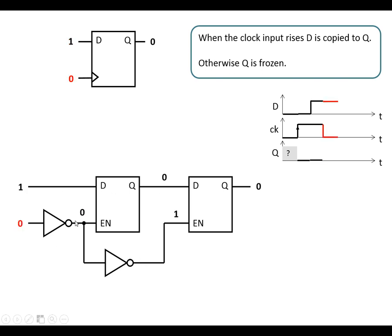If the clock goes low, we've now got a 1 at the enable of the first latch, which means D is going to be copied to Q. So the 1 that we've got at D can actually get copied across into the middle of the flip-flop. The clock being low inverts to a 1 then to a 0 for the second latch, which freezes it. So although we've got a 1 in the middle now, this latch is frozen and the output stays the same.